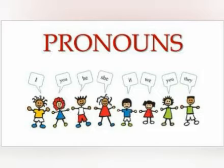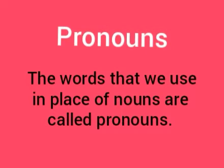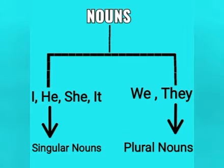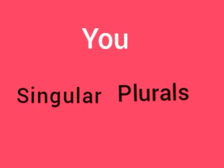Now let us learn what pronouns are. The words that we use in place of nouns are called pronouns. The words I, he, she and it are used for singular nouns, whereas we and they are used for plural nouns.